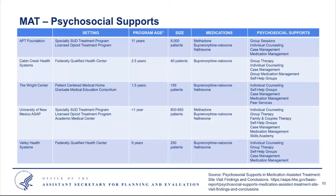Site visits to five provider organizations demonstrated great diversity in approaches to delivering psychosocial supports. Programs employed a range of supports varying in content and intensity, including individual counseling, group counseling, self-help groups, case management, peer recovery specialists, medication management, and skills learning groups. Some programs incorporated specialty tracks for patient subgroups such as pregnant and postpartum women, transition-age youth, patients with PTSD, and patients with more complex psychiatric disorders.